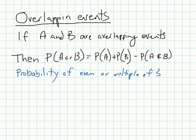Pretty simple. Lastly, let's look at overlapping events. Overlapping events. If A and B are overlapping, what does overlapping mean? Well, overlapping means that part of the probability of this happening includes a little part of this happening.